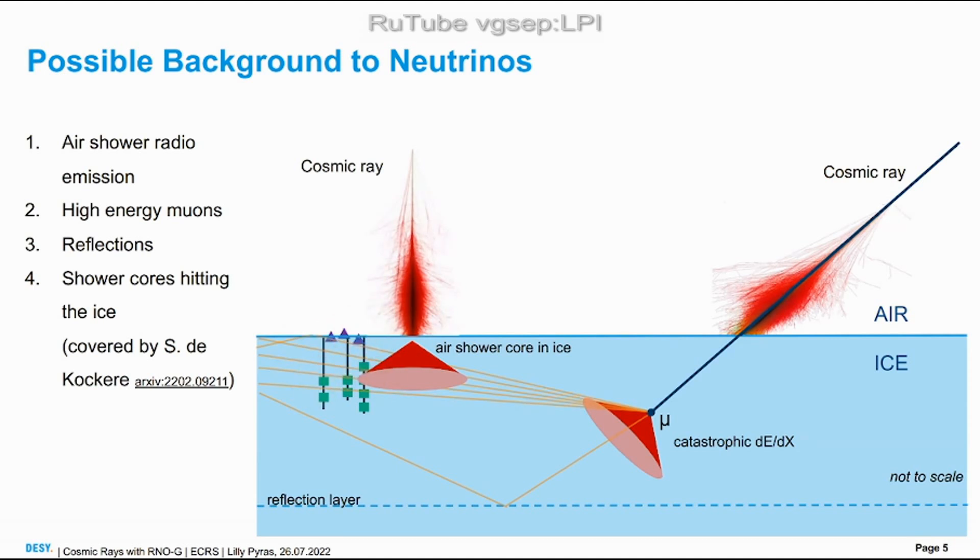What also can happen is that one of the muons out of a cosmic ray travels further into the ice and induces a particle cascade which pretty much looks like a particle cascade induced by a neutrino. This can happen through catastrophic energy loss.